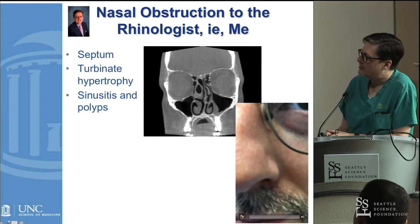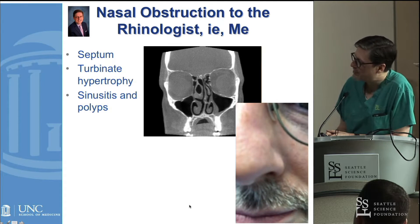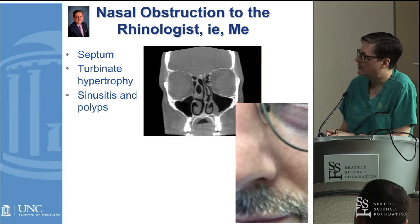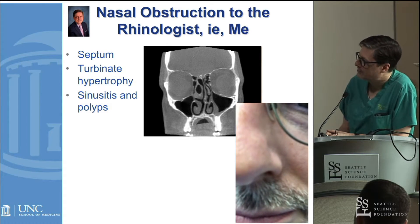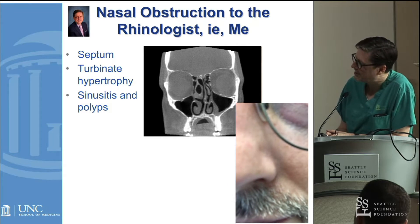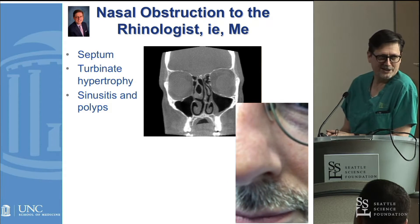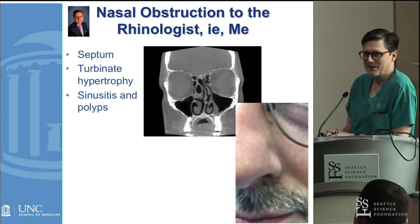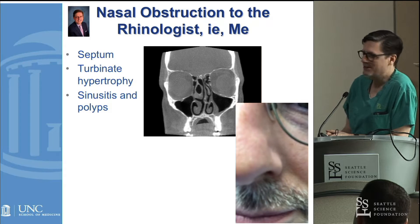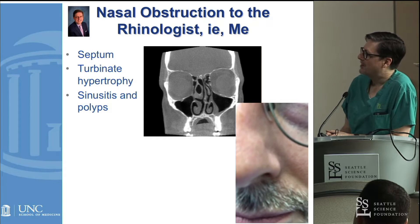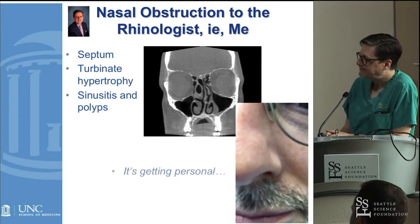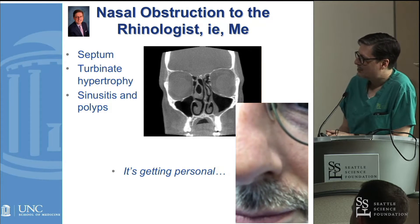I showed you one of my CT pictures the other day, and you can see I've got a little sinusitis. I also have some septal deviation, turbinate hypertrophy, some allergy, some polypoid change in my turbinate, but you'll also notice I have a little bit of valve collapse. I have a little upper lateral cartilage collapse there, and it is getting personal.